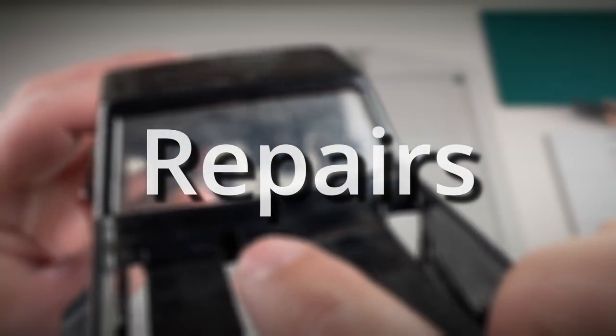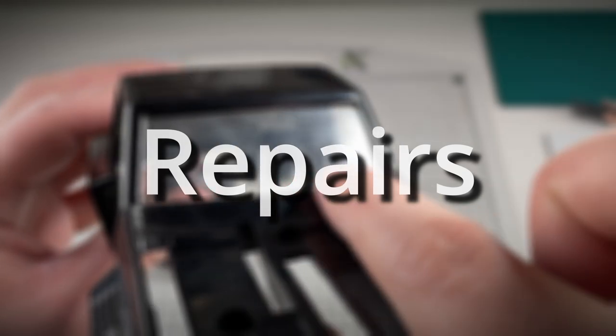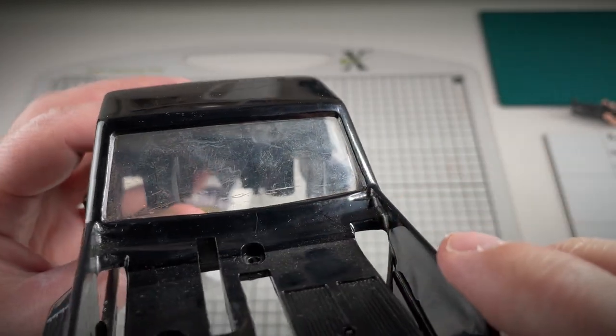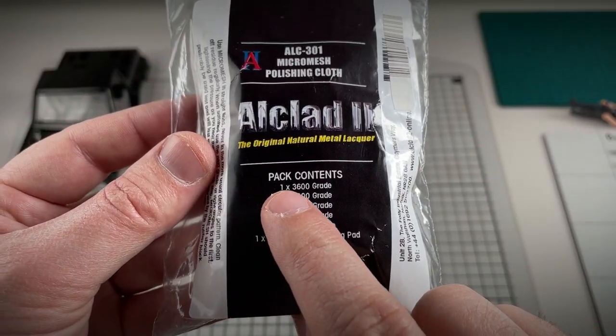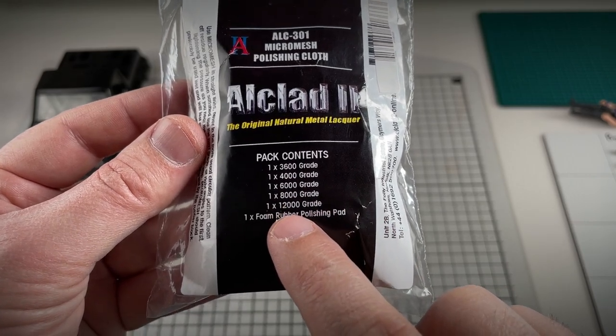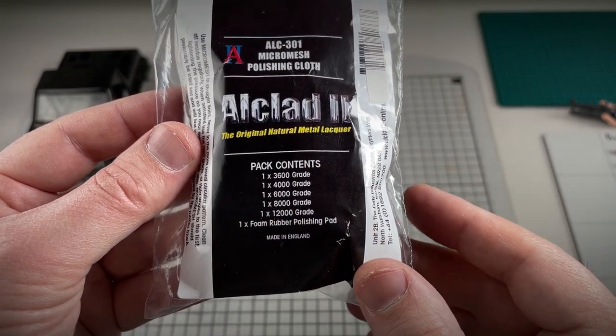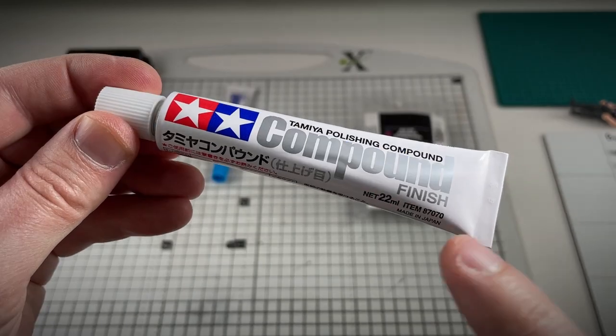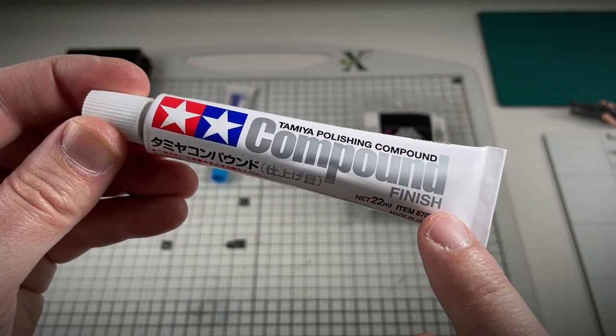Let's start with this scratched windscreen. You can see it's heavily damaged over the years. I've got these Alclad polishing cloths. Never used these before. So it's going to be interesting to see how this works. I also have some of this compound as well. So let's crack on.